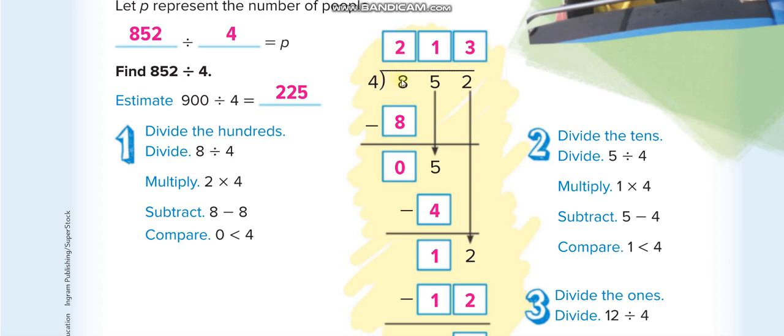You will check: 4 times what will give you 8 or less than that? You can't go more than that. 4 times 2 is 8. 8 minus 8 is 0. Then you bring the next number down to finish the first one.